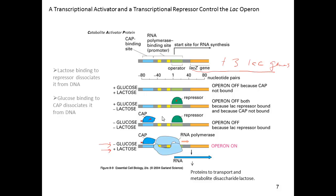The important point is you only want to turn on these lactose genes if lactose is present but glucose is absent. When lactose is your only possible source of energy, you want to make the lactose genes so you can take advantage of the presence of lactose. If glucose is present, making these lactose genes is a waste of time and energy — you will be much better off just using the glucose directly. So that's why the cell shuts them off when glucose is present.